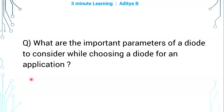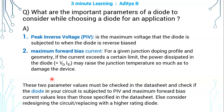What are the important parameters of a diode to consider while choosing a diode for a particular application? The two important parameters to consider are peak inverse voltage and maximum forward bias current that the diode can tolerate.